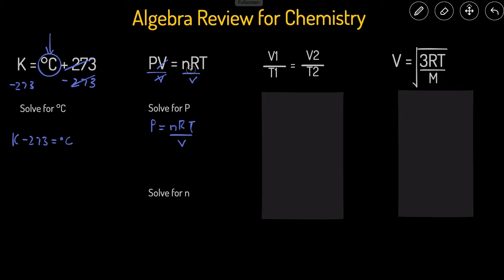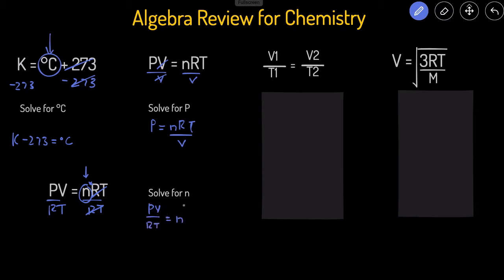In the next problem we have to solve for N from PV equals NRT. We have to get N by itself, so we have to get rid of its two neighbors, R and T. N is being multiplied by R and T — when letters are next to each other with no visible operation, they're being multiplied. So we divide both sides by R and T, because division is the opposite of multiplication. The RTs cancel out on the right side, giving us PV divided by RT equals N.